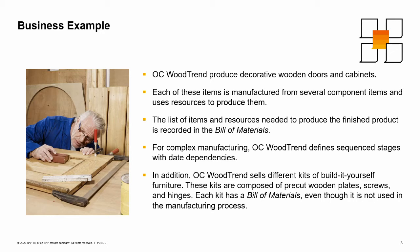For complex manufacturing, OC Woodtrend defines sequenced stages with date dependencies. In addition, OC Woodtrend sells different kits of build-it-yourself furniture. These kits are composed of pre-cut wooden plates, screws, and hinges. Each kit has a Bill of Materials, even though it is not used in the manufacturing process.